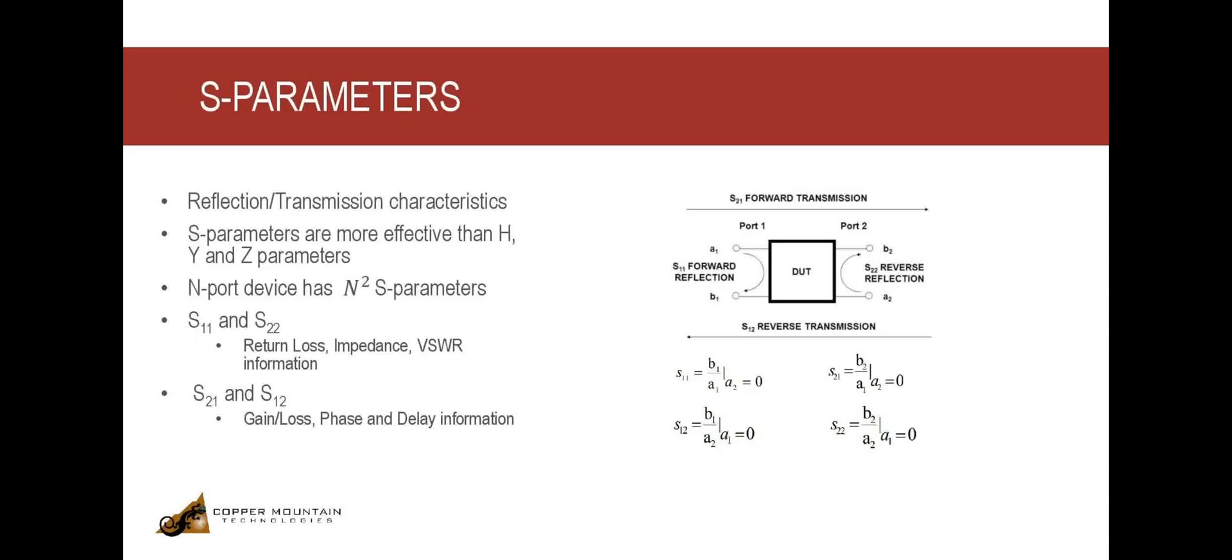The numbering convention for S-parameters is that the first number following S is the port where the signal emerges, and the second number is the port where the signal is applied.